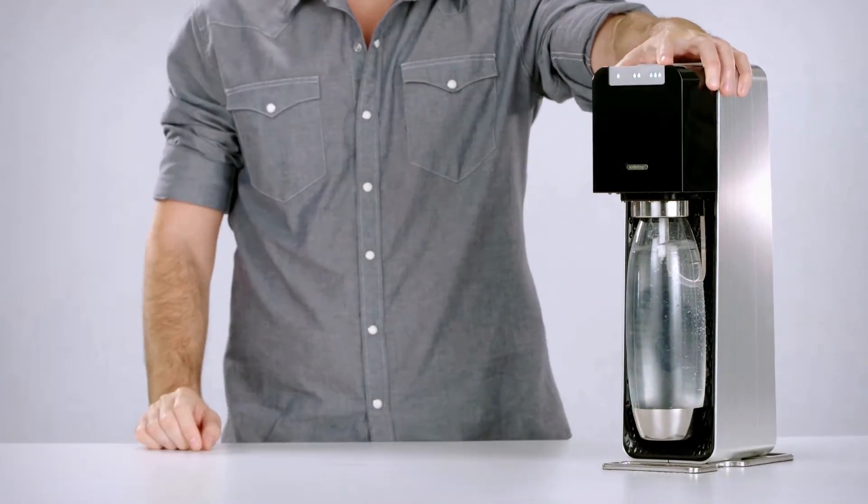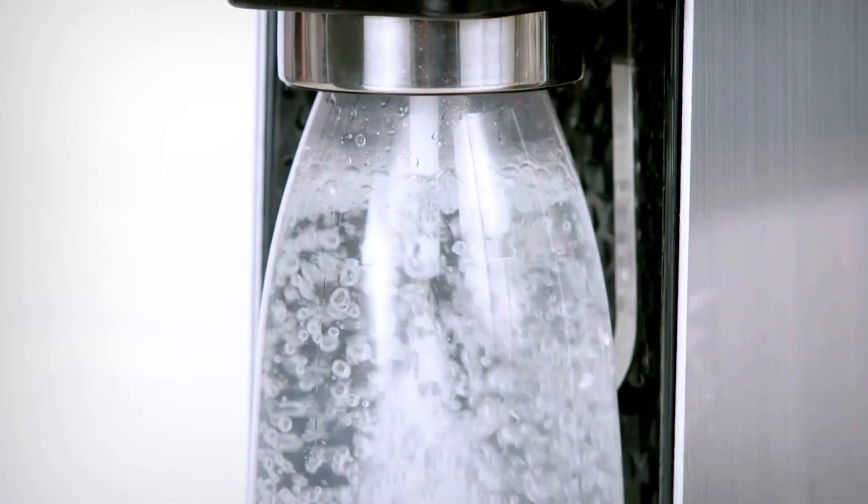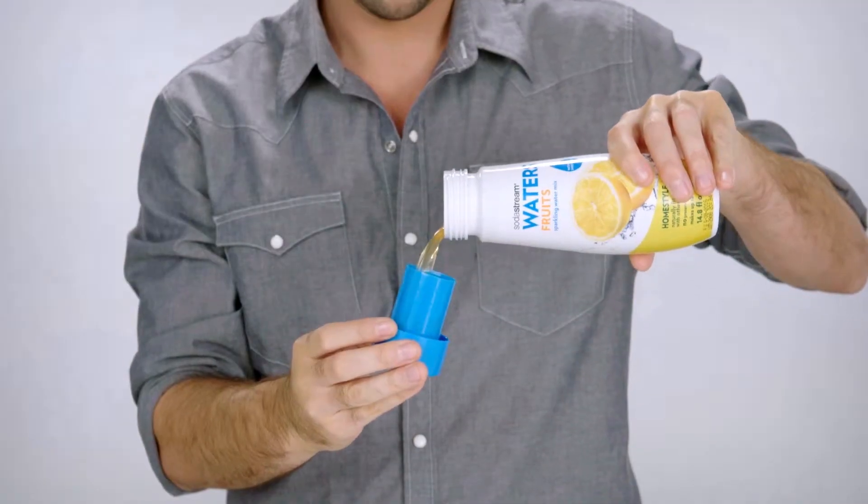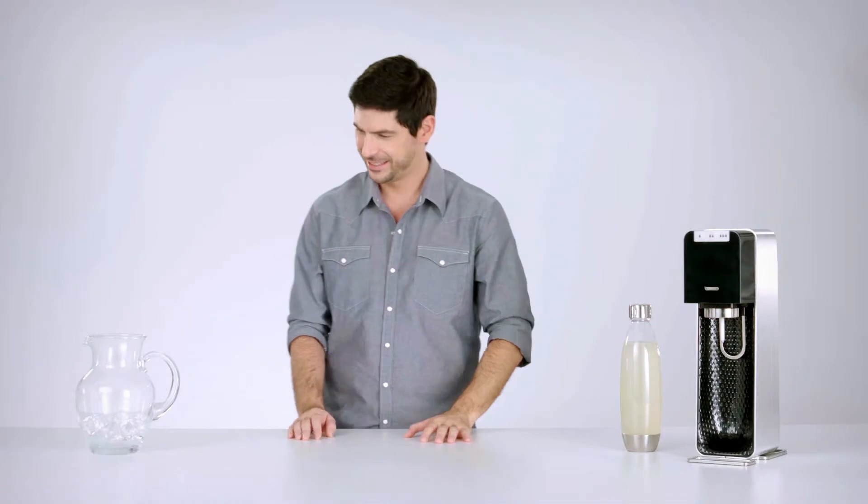Fizz 1 litre of cold fresh water with a SodaStream sparkling water maker. Add a shot of lemonade or pack in an extra punch by squeezing in a lemon.